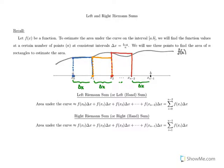We're going to add all of those together. We have the function value f of x naught times the base — base times height is the area of a rectangle. So f of x sub i is the height and delta x is the base, so this whole thing is the area of a rectangle. We can represent this with sigma notation, which says that for every i from 0 to n minus 2, we're going to take f of x sub i times delta x — that is x sub 0 plus x sub 1 plus x sub 2 all the way to x sub n minus 2.